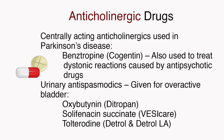Centrally acting anticholinergic drugs used in Parkinson's disease include benztropine, or Cogentin, which is also used to treat dystonic reactions caused by antipsychotic drugs. Urinary antispasmodics are given for overactive bladder and include oxybutynin, or Ditropan, solifenacin succinate, or VESIcare, and tolterodine, or Detrol and Detrol-LA.